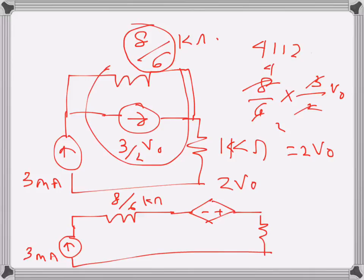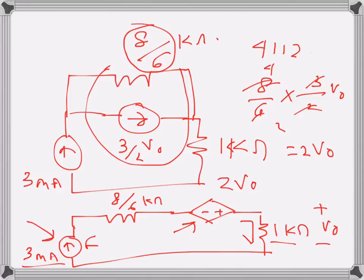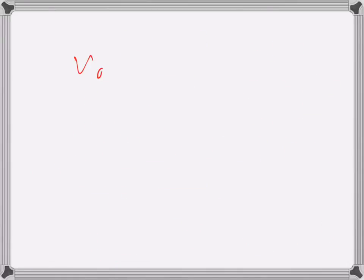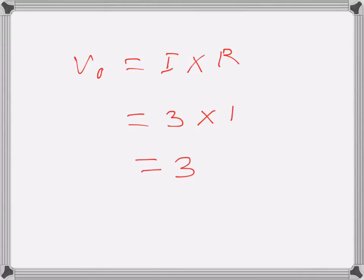We have the 1 kilo ohm resistance across which we have our desired V0. Now we have a series circuit with a voltage source and a current source — the dependent voltage source is 2 V0. The current source defines the current of the series circuit, so the current through the 1 kilo ohm resistance is 3 milliamps. Therefore V0 equals I times R, which is 3 milliamps times 1 kilo ohm, giving V0 equals 3 volts.